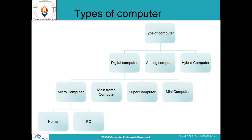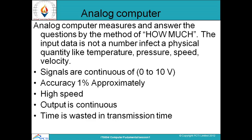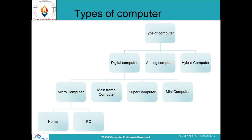Now we come to a significant part of this study — the different types of computers. These are digital computers, analog computers, and hybrid computers. Among digital computers we have different types: microcomputers, which are very tiny as the name suggests; mainframe computers; supercomputers; and mini computers. Microcomputers are of two types: home computers and PCs, which are personal computers.